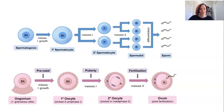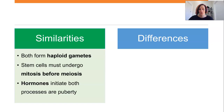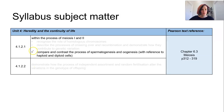At a base level these are really similar processes, but when you look at the finer details they are massively different. Similarities include: both form haploid gametes from diploid cell lines, both require the stem cell line to undergo mitosis first to boost numbers before meiosis, and both are initiated by hormones during puberty. However, spermatogenesis produces four gametes from one diploid cell while oogenesis produces only one viable gamete and two or three polar bodies. The stem cell lines are different, and importantly oogenesis is discontinuous while spermatogenesis is one continuous development.